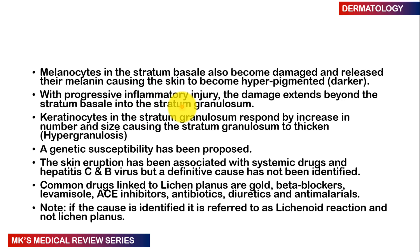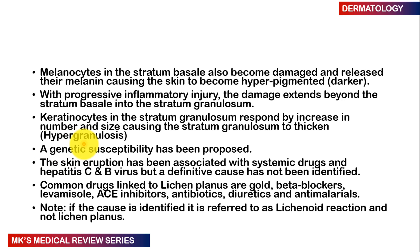The layers of the epidermis are: the stratum basale (lower layer), followed by the stratum spinosum, the stratum granulosum, the stratum lucidum (only found in thick skin), and finally the stratum corneum, which is the uppermost layer. The keratinocytes in the stratum granulosum respond by increasing in number and size, causing the stratum granulosum to thicken — a condition referred to as hypergranulosis. There is also some genetic predisposition implicated, and skin eruptions have been associated with certain systemic drugs and viral infections such as hepatitis C and hepatitis B, though no definitive cause has been identified.